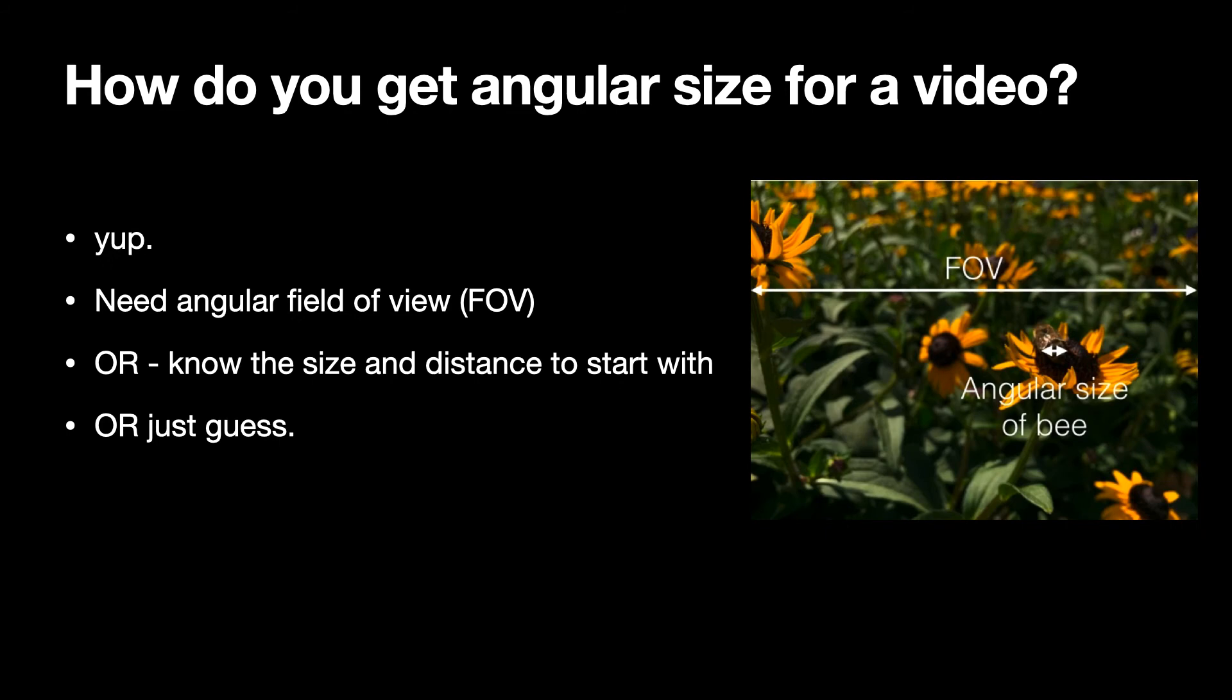So how do you get the angular size from a video? So this is tough. The first thing you need to know is the angular field of view of the camera. So if I took this picture of a bee, and if I know the angular size from one side of the frame to the other, then I can use that to scale all the other things in the video. And I just measure the angles as though they were lengths.